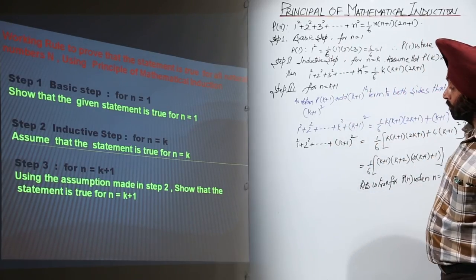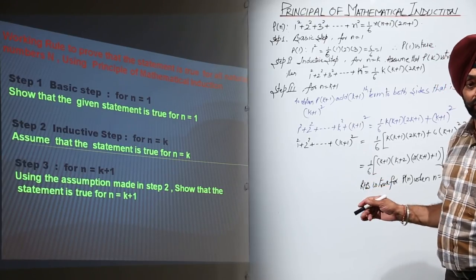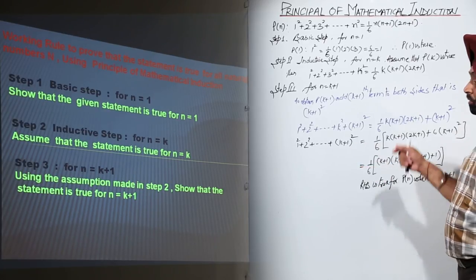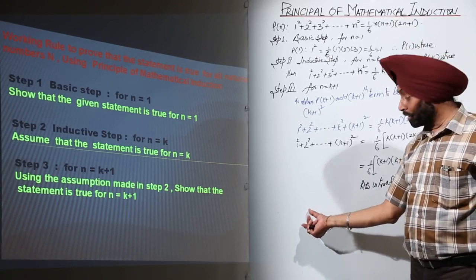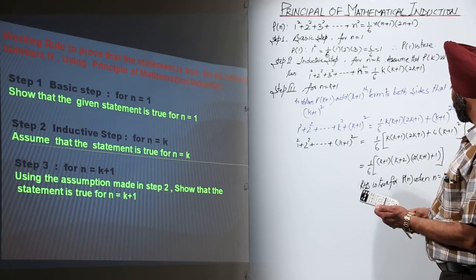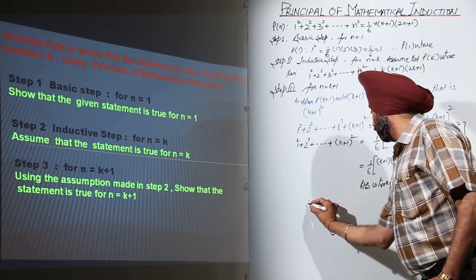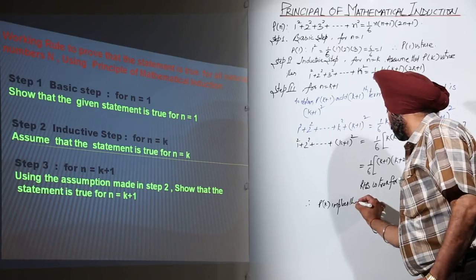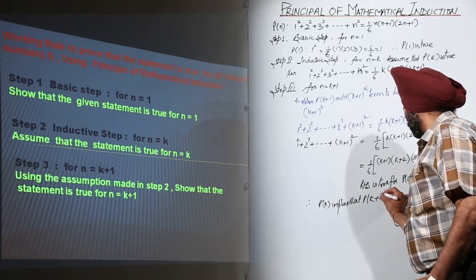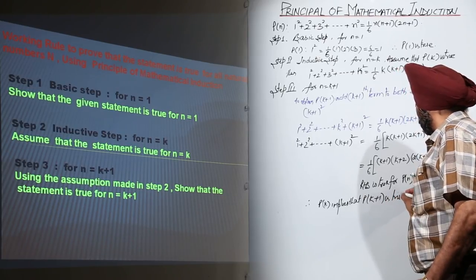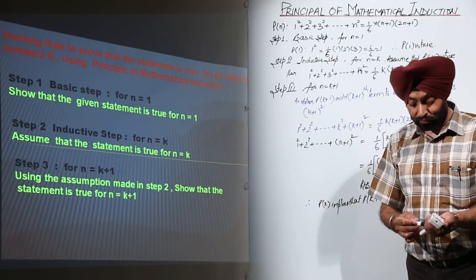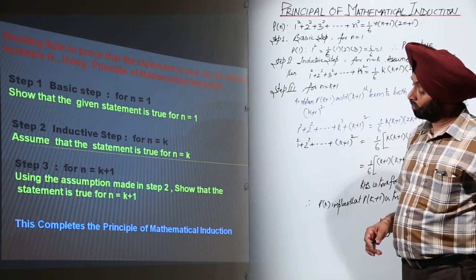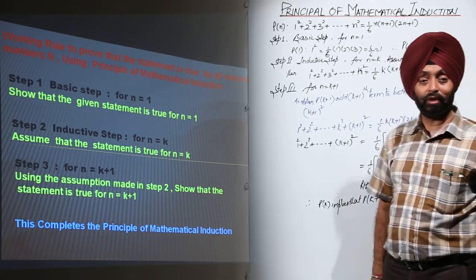Using the assumptions made in step 2, we have shown that the statement is true for n equal to k plus 1. Therefore, P(k) implies P(k+1) is true. Hence P(n) is true by the principle of mathematical induction. This completes the proof by mathematical induction.